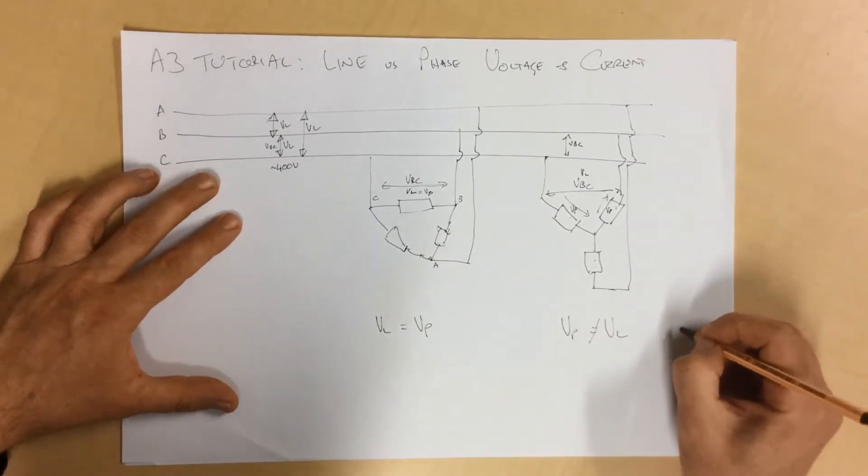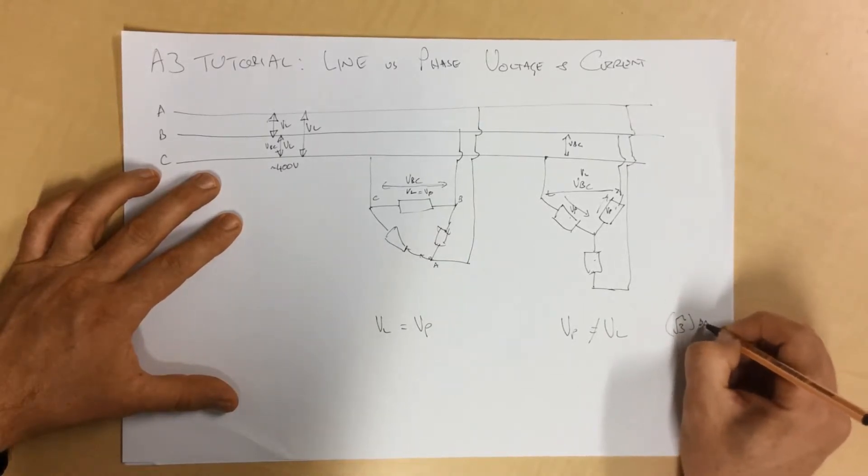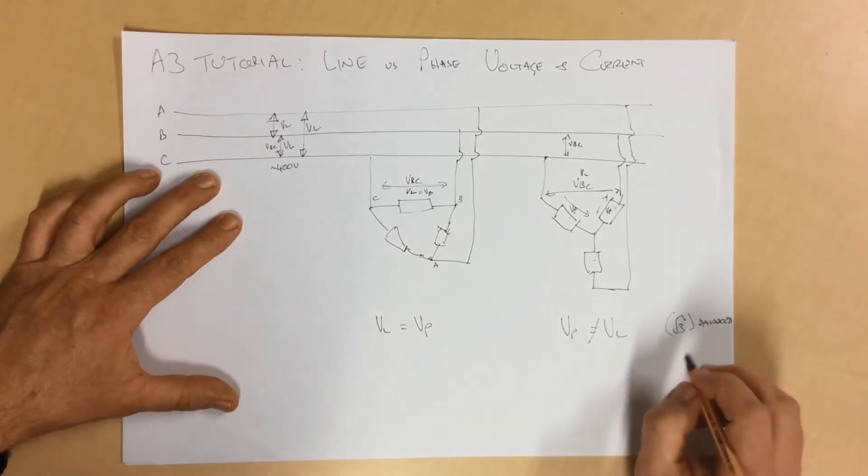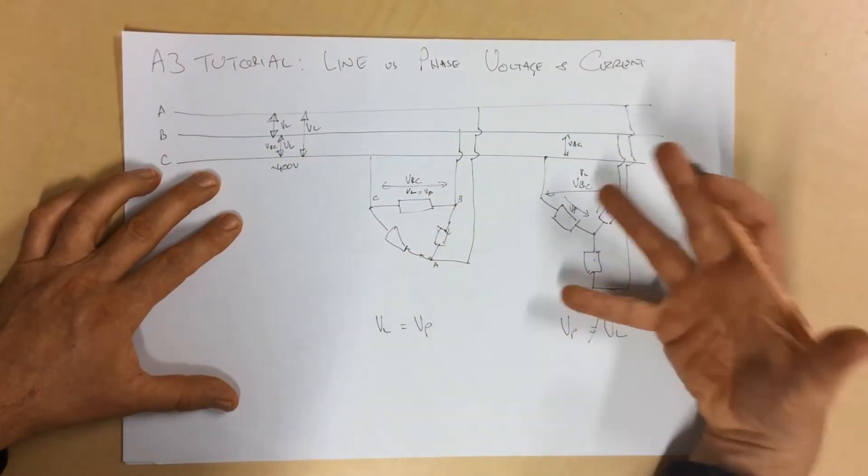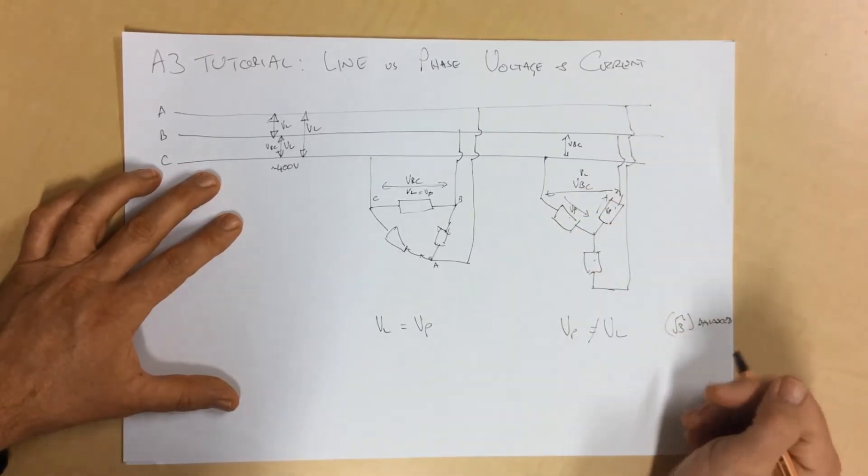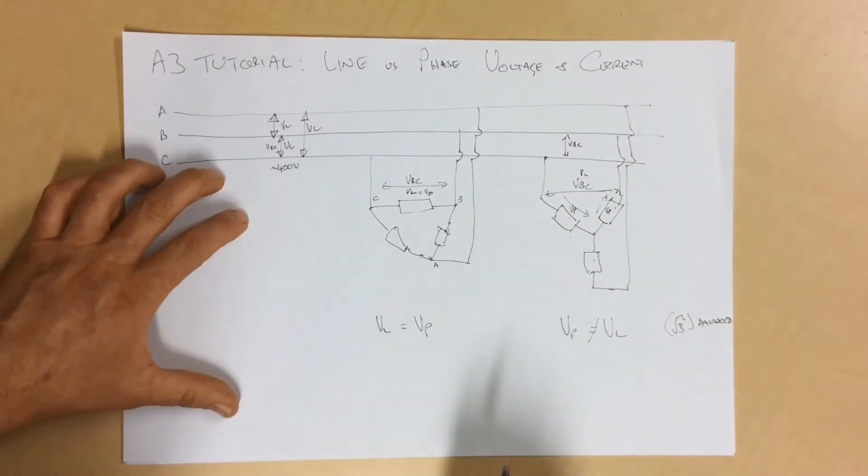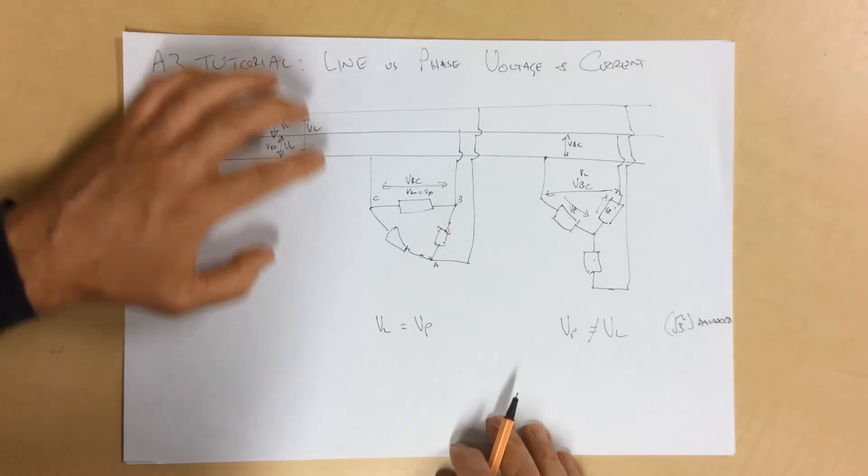Now, in a balanced system, and I've talked about this elsewhere, in a balanced system, that relationship is root 3. And this is where the root 3 comes into it. We're not going to go there at the moment. We're just trying to get the distinction between what is a line voltage and what is a phase voltage.